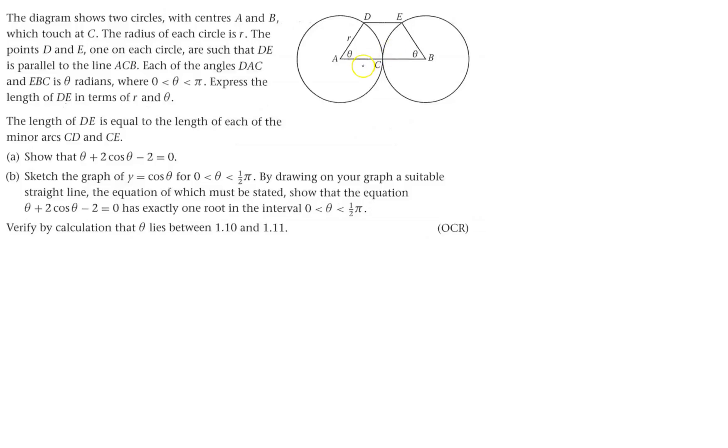First I'll label the diagram. The radius is r and r, and we've got to express the length of DE in terms of r and theta. Well, that's r there as well.